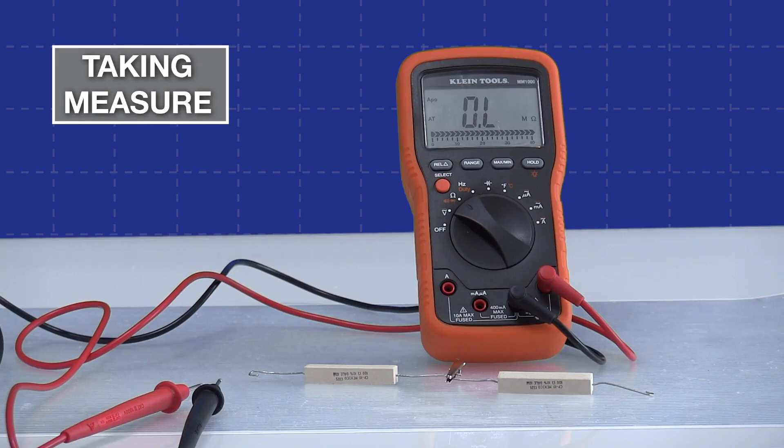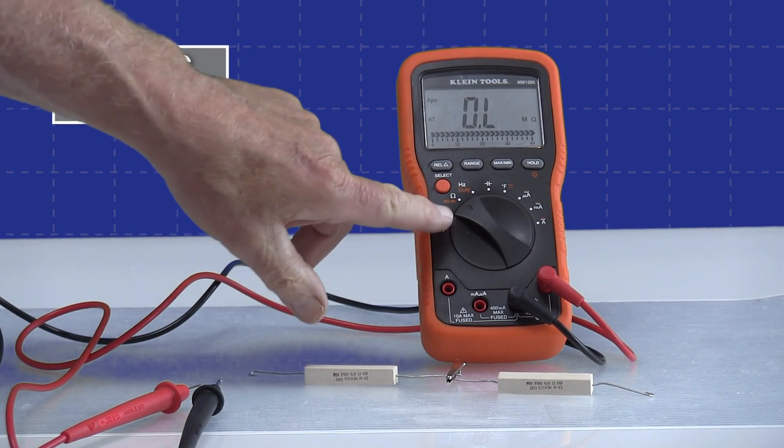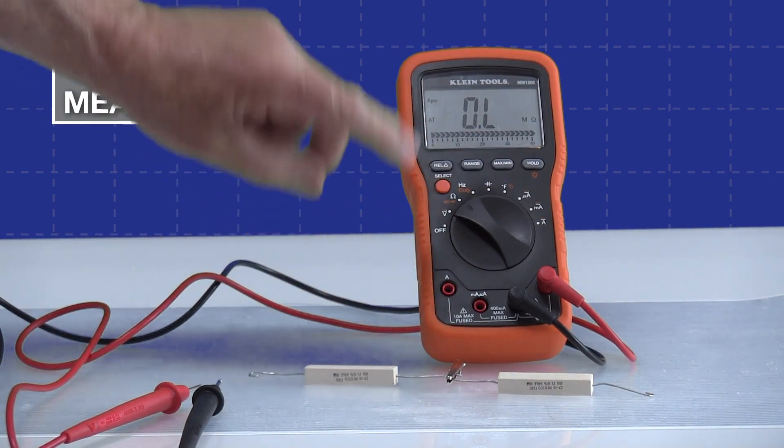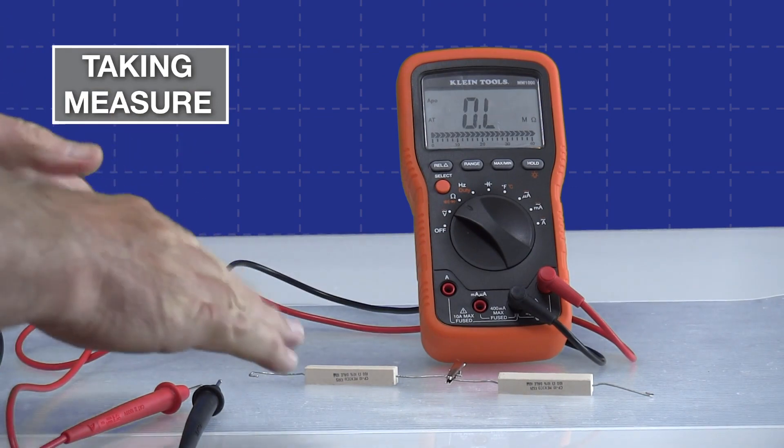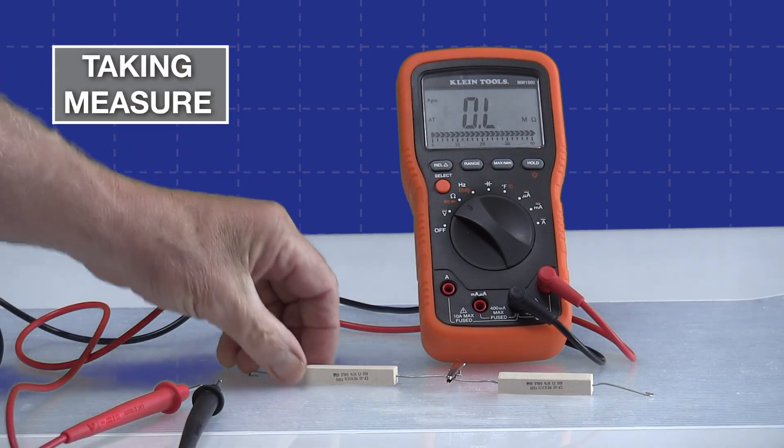As you can see, we have our lab set up. I've got the digital multimeter set up and I have ohms selected so we can take the resistance measurement. You can see we're showing OL because we're out of range right now. The meter is not catching any kind of measurement. And I have two resistors here.